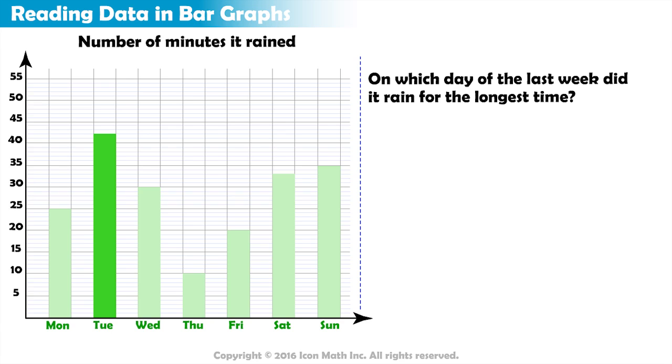The bar for Tuesday ends at 2 parts over 40, so it rained for 42 minutes that day.